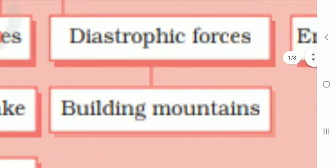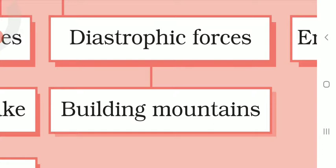The diastrophic forces are responsible for building mountains on the surface of the earth. For example, diastrophic forces caused the formation of very important mountain ranges such as the Himalayan ranges. Most of the major mountains — like the Andes, Alps, and Himalayan mountains — have formed from diastrophic forces.